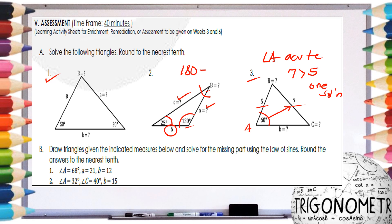For assessment Part B, let's draw number 2 first. We have triangle ABC with angle A equal to 32 degrees, angle C equal to 40 degrees, and given side B equal to 15. To solve this, follow how I solve the given two-angles-one-side problem. The first thing to solve is the missing angle B, by subtracting from 180. Once you have angle B, you can use the Law of Sines to find side C and side A.